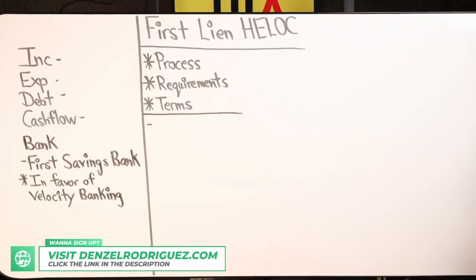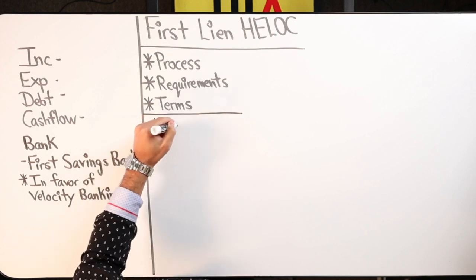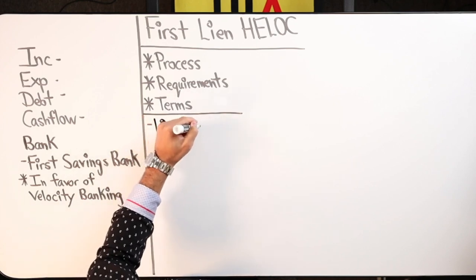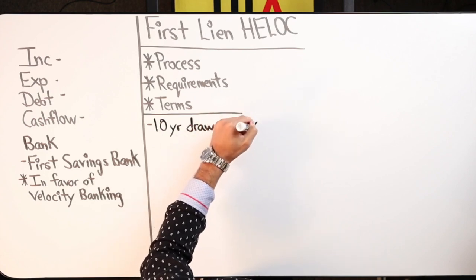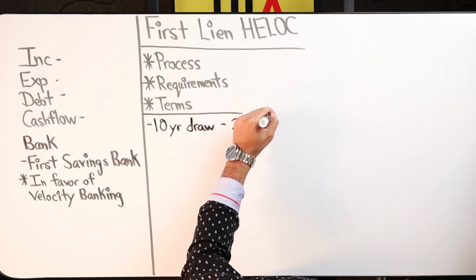Our particular First Lien HELOC is a 10-year draw period with a 20-year repayment. What that means is that it functions as a HELOC, as an open-ended line of credit for 10 years, and at the end of 10 years, any remaining balance that you have converts into a 20-year fixed-rate mortgage.